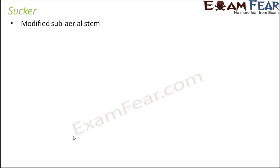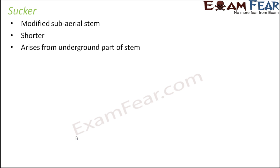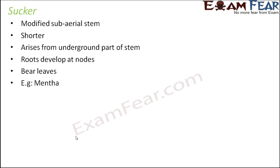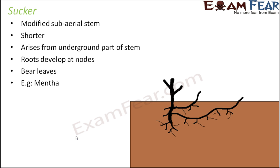Let us look at the sucker now. Sucker is again a modified sub-aerial stem. They are shorter, however, stouter than a runner — so not as long as a runner, but shorter and stouter. They arise from the underground part of the stem. Roots also develop at their nodes and they bear leaves. An example is mentha. Here you can see the diagram of a sucker — it is creeping along the ground but under the soil.